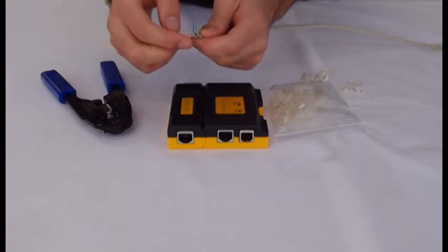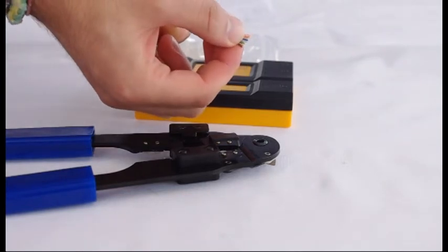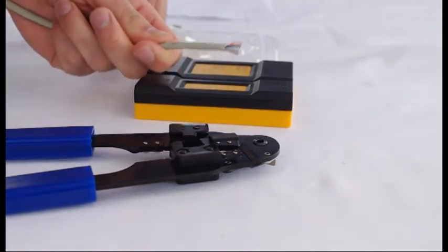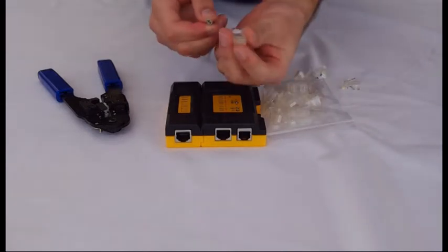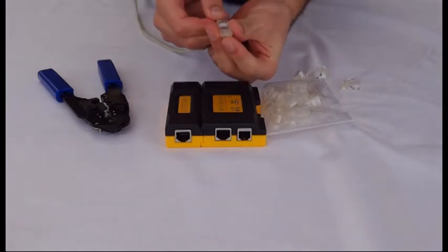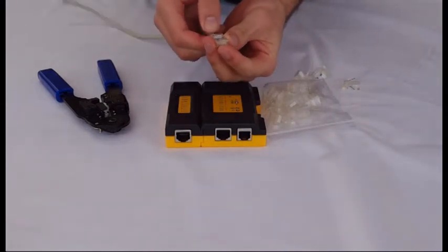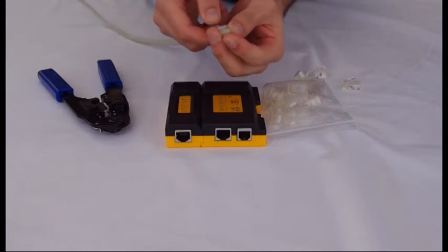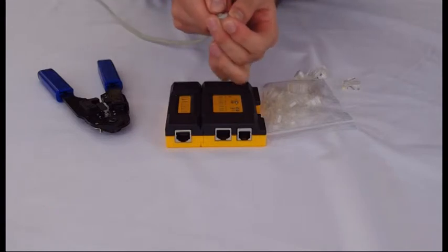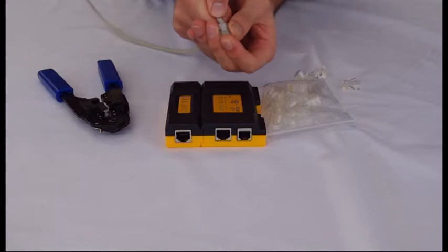Now once you get all of these wires into order and you have them nice and straight, what you can then do is get your plug. You're going to make sure the clip is facing downwards, and all you're going to do is put the wire in and just have a quick look to make sure they're all going in the right place, and then push in as hard as you can to make sure that the wires make a good connection.